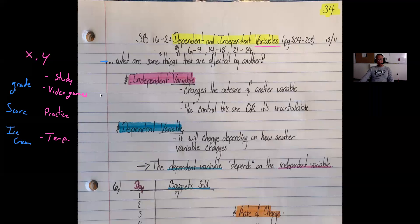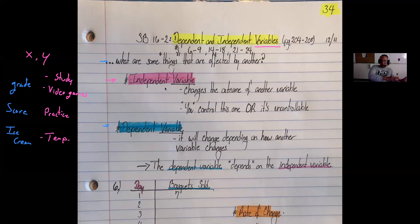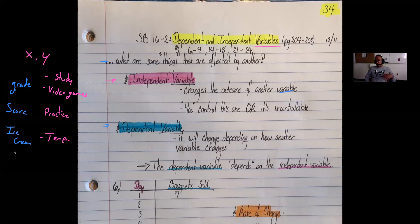That brings us to the two different types of variables we are talking about today: the independent variable and the dependent variable. An independent variable changes the outcome for another variable—it comes first and causes something else to change. Think about ice cream sales and temperature. As the temperature goes up—meaning it gets hotter—ice cream sales go up. It cannot go the other way around where more ice cream sold makes the weather hotter.